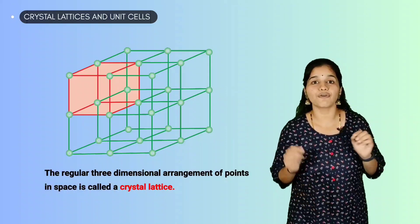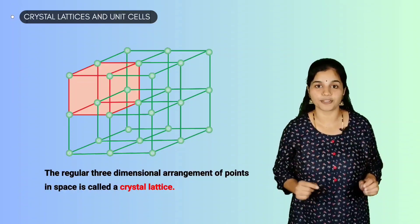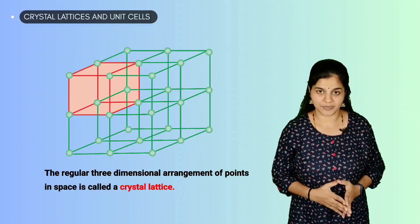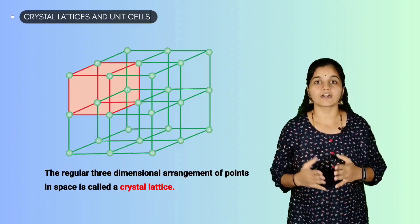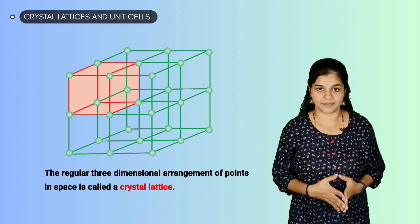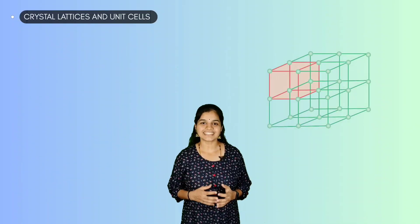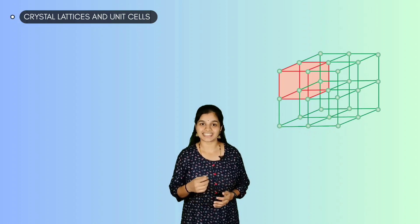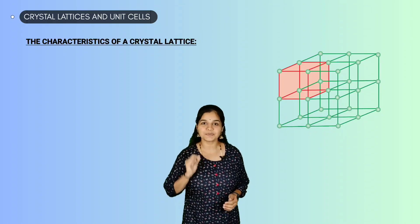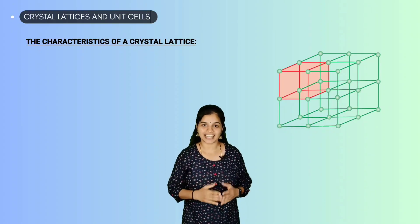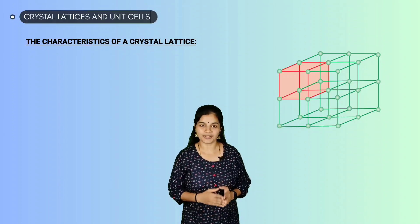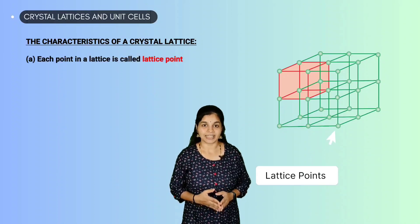Only 14 possible three-dimensional lattices exist. They are called Bravais lattices. These crystal lattices have certain characteristics, and each point in a lattice is called a lattice point or lattice site.